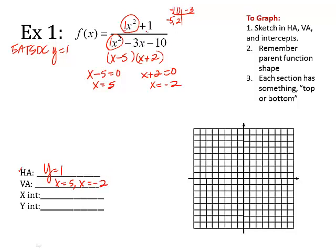X-intercepts. Remember the rule for x-intercepts. That means that I take the top, x squared plus 1, set it equal to 0. Well, x squared equals negative 1. I can't take the square root of a negative number, which means there is no x-intercepts. So we just put none for now. It can happen.